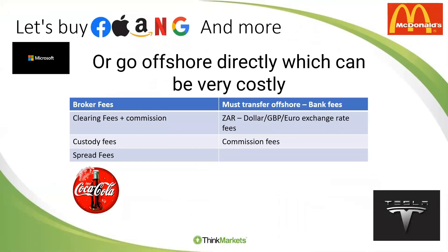Now, the big thing is if I wanted to buy these things and go offshore, the big problem is cost. To give you an example, if you buy any of those ETNs that we just spoke about — Microsoft, Coca-Cola, or Tesla — your cost is pretty much exactly the same as if you are buying a share through ThinkMarkets. It's 0.25%, minimum 30 Rand, and that is it. You don't have to worry about exchange rate fees, exchange rates, and all of these type of things.